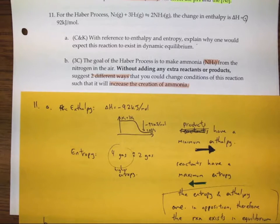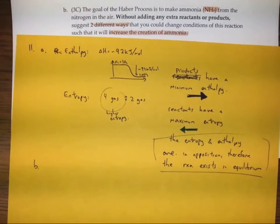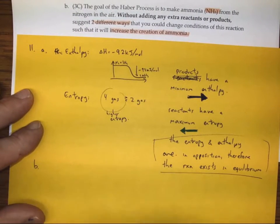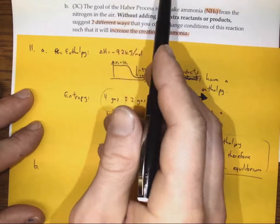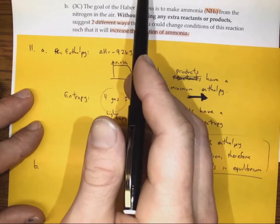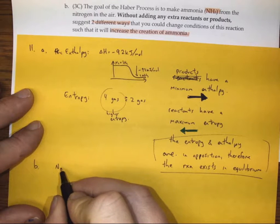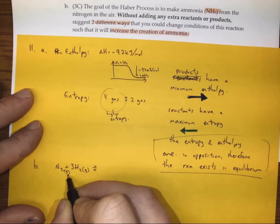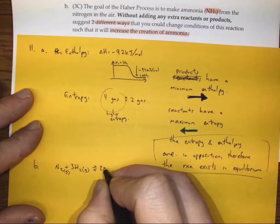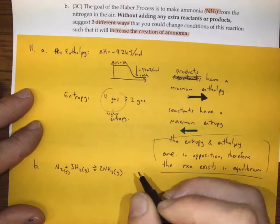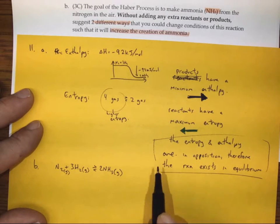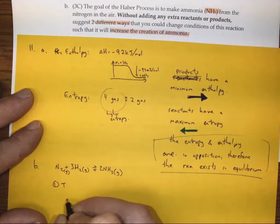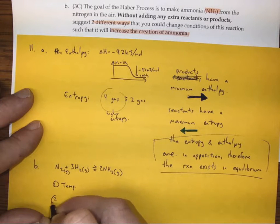We have three ways of manipulating equilibrium using Le Chatelier's principle. One is we can increase or decrease the concentration of one of the reactants. We can also increase or decrease the volume and pressure. And lastly, we can increase or decrease the temperature. So if we're not adding reactants or products, the only other things we have to play with are temperature and pressure.